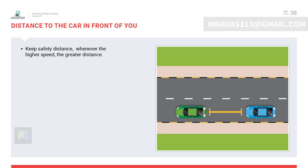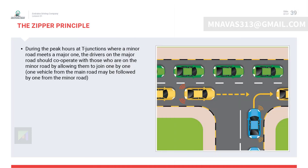While driving inside cities, the distance from vehicles in front depends on several factors: flow of traffic, traffic lights, junctions, pedestrian crossings, and the state of the road. Drivers should keep sufficient distance from vehicles ahead to have enough time to react and avoid collision in an emergency. During peak hours at T-junctions where a minor road meets a major one, drivers on the major road should cooperate by allowing minor road vehicles to join one by one — one from the main road, one from the minor road.